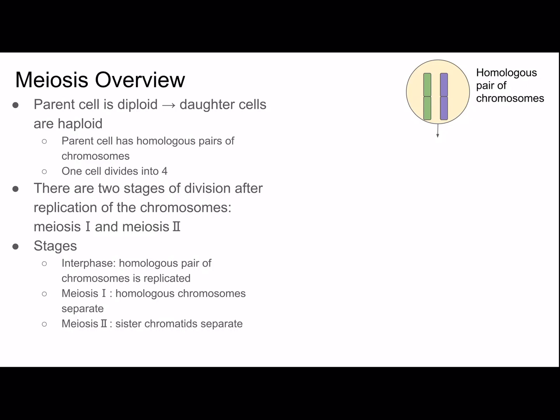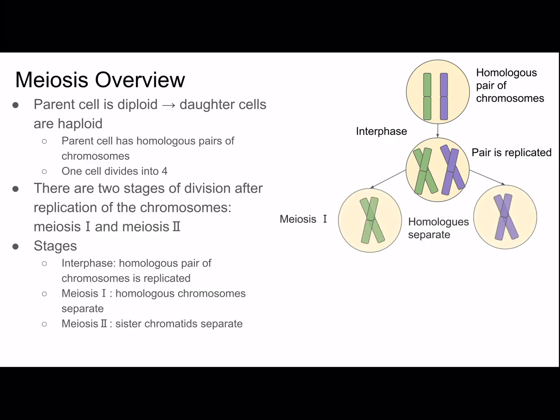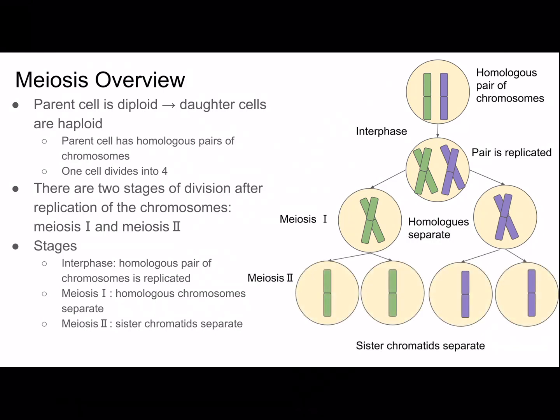We start with the homologous pair of chromosomes, and then in interphase the pair is replicated. The chromosomes would not really be condensed in interphase, but I drew them as condensed so it's easier to see how we're taking a diploid parent cell and creating haploids. Then the homologous chromosomes are separated in meiosis I, and in meiosis II the sister chromatids are separated. This is a simplified version of what really happens.